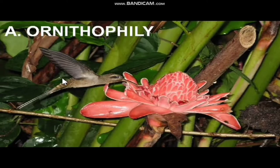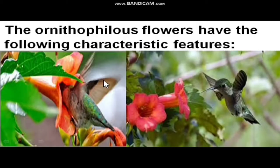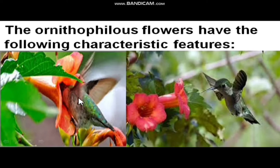Ornitho means birds. Birds are also helpful in pollination — there are many birds that are helpful in pollination. The unique characteristics: flowers which process in order to attract these birds — first, the flower should be bigger in size so that the birds can go inside to capture the nectar. The shape of the corolla is almost cup-like or bell-like shape.